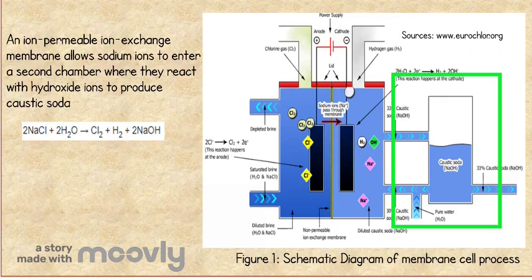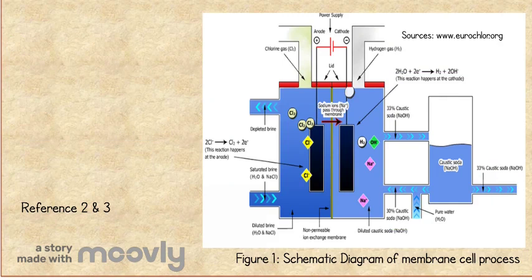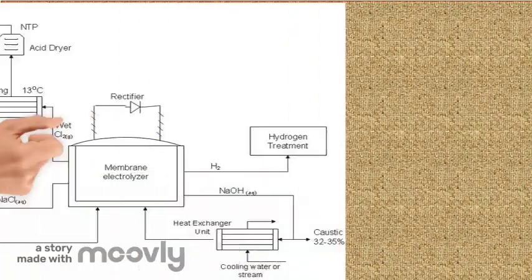An ion-permeable ion exchange membrane allows sodium ions to enter a second chamber where they react with hydroxide ions to produce caustic soda. The diagram here shows the reaction scheme of the electrolysis process in a membrane electrolyser.